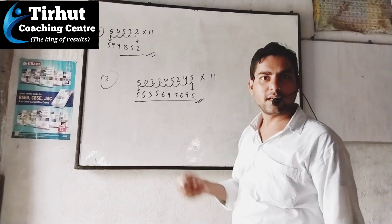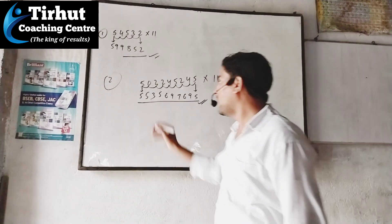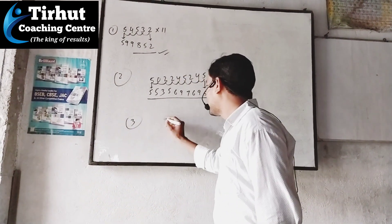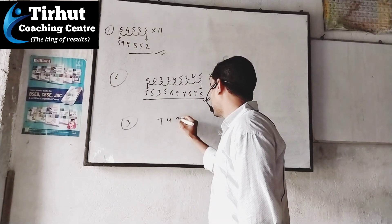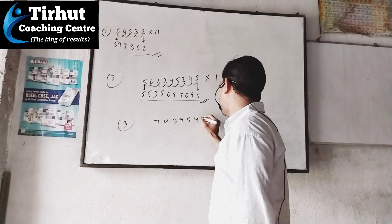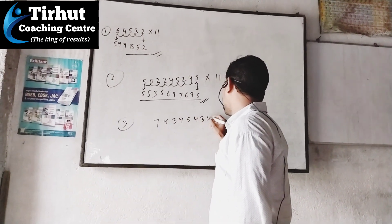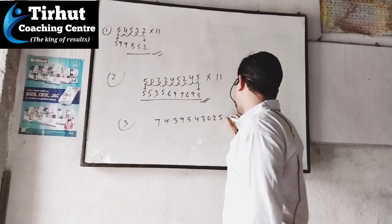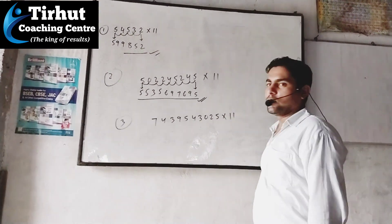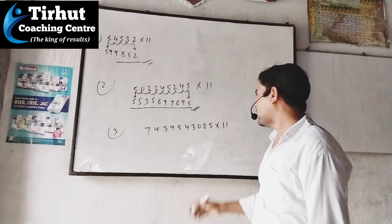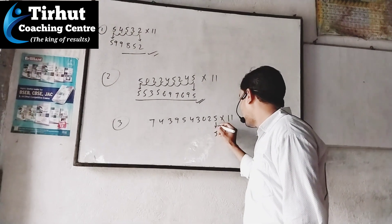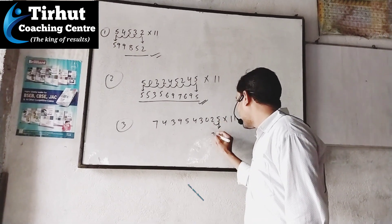You can check it. Let's take another example. Let's understand. What is this? 7-4-3-9-5-4-3-0-2-5 and we need to use this from 11. What is this? 5-5, 5-5, 5-5, 2-5.